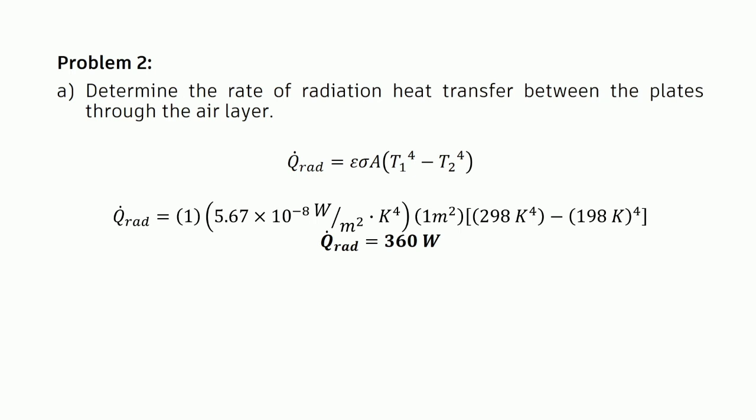between the plates through the air layer. This is our formula for finding the heat rate of transfer by radiation: Q̇ᵣₐ𝒹 = εσA(T₁⁴ - T₂⁴). The emissivity factor of black is 1, the coefficient σ = 5.67 × 10⁻⁸ W/(m²·K⁴), and